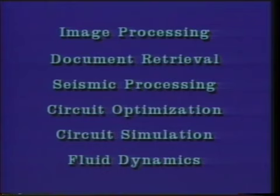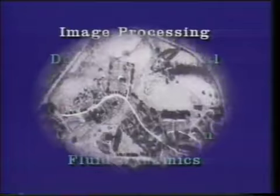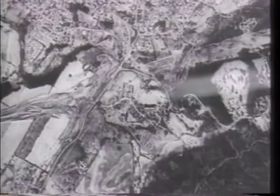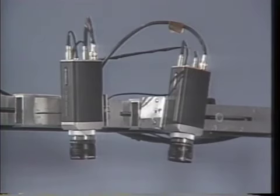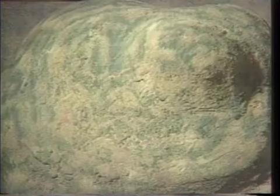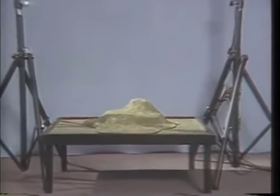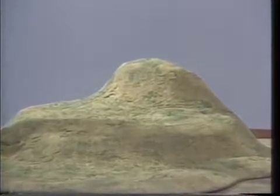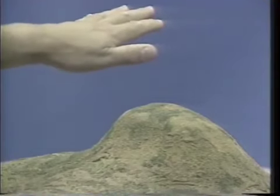The Connection Machine System is ideal for image processing. The analysis of aerial images is one such application. Here, two cameras are pointed down at a model terrain. Because the cameras are at different positions, each sees the scene from a slightly different angle. Elements of the scene that are above ground level jump noticeably between the two views. Elements that are low to the ground appear in the same position in each image.